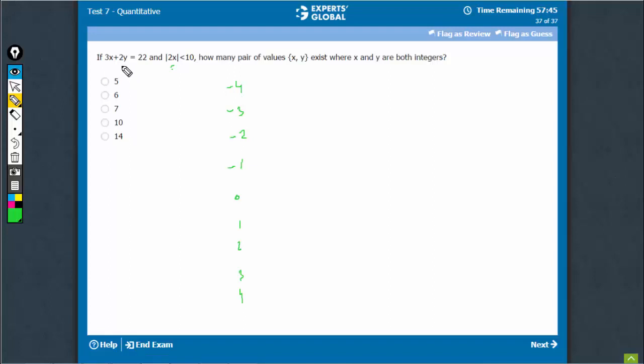Now, quite intuitively, just start putting these values. When x is minus 4, y will turn out to be c. Minus 4 means something even, this comes here, even plus even would be even.